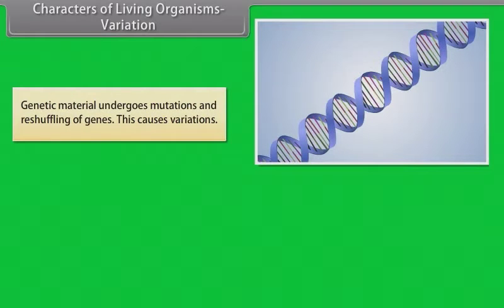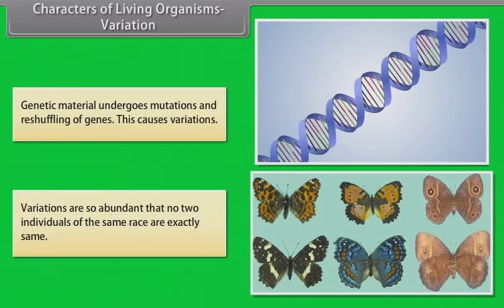Characters of living organisms - Variation: Genetic material undergoes mutations and reshuffling of genes. This causes variations. Variations are so abundant that no two individuals of the same race are exactly the same.